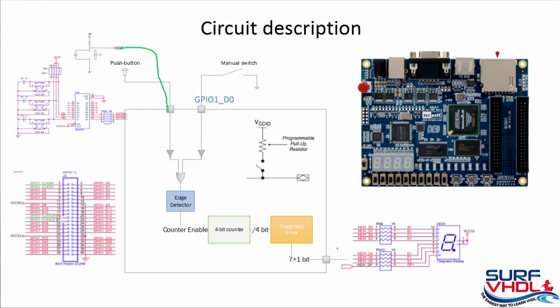The LED circuit is this one: the pin is connected to a resistor that drives the LED. If you want to turn on a segment, you have to drive the pin low, because this point is connected to VCC. When this point is high the LED is off; when this point is connected to ground the LED is on.